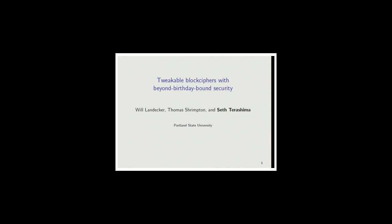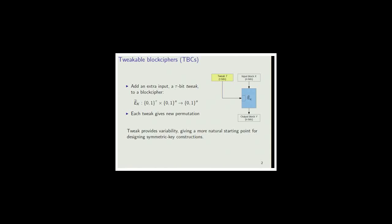I'm Seth Tereshima and I'm going to be presenting some joint work I've done with Will and Tom on how to construct tweakable block ciphers with beyond-birthday-bound security guarantees. Tweakable block ciphers are a symmetric key primitive initially proposed by Liskov, Rivest, and Wagner in 2002. They're very similar to a regular block cipher, but we have this extra input, the tweak. Each time we change the tweak, we get a brand new permutation. The tweak provides built-in support for variability, making tweakable block ciphers a natural starting point for designing symmetric key constructions.